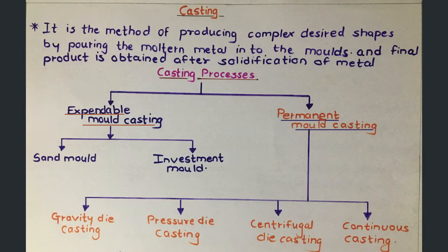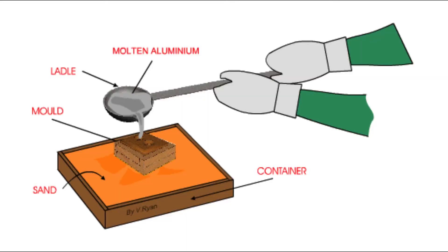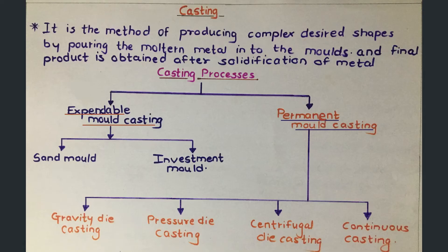Welcome to this video on casting processes. Casting is the process of producing complex and desired shapes by pouring molten metal into molds, and the final product is obtained after solidification. This process is the cheapest compared to other manufacturing processes, but it consumes more time.